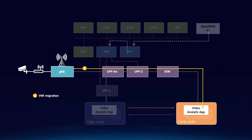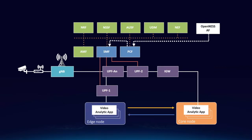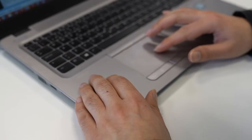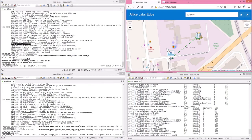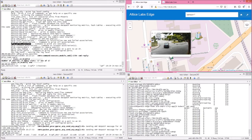However, under certain circumstances — for example, insufficient resources, technical failure, or maintenance operations — temporary deployment of these applications in the core may be required to guarantee service continuity. This demo shows the dynamic relocation of a video analytics application between edge and core nodes and the automated control of traffic steering performed by Intel OpenNES. The video analytics application is a typical surveillance application that counts the number of people, vehicles, and bikes passing through a specific place. Two instances of the application are deployed at the edge and core nodes. The graphical interface shows where the video camera and the edge nodes are deployed at Altus Labs premises.